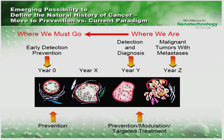The major problem in cancer diagnosis is that we are not able to diagnose cancer in the early stage. With present traditional methods, we can only diagnose cancer in the later stage, at which point we have to go for targeted treatment, radiation, or chemotherapy. By using nanotechnology, we can go for early detection of cancer and protect the person from cancer death.